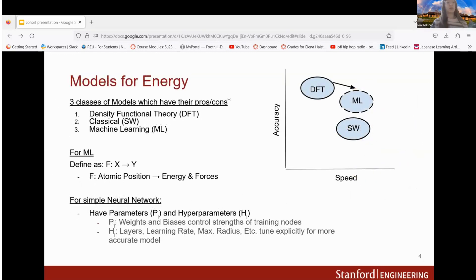There are about three classes of models. First we have density functional theory which has high accuracy but lower computational speed, followed by Stillinger-Weber which has higher speed but lower accuracy. And then there is machine learning, which we base off of DFT, so we hope to have similar accuracy but higher speed.